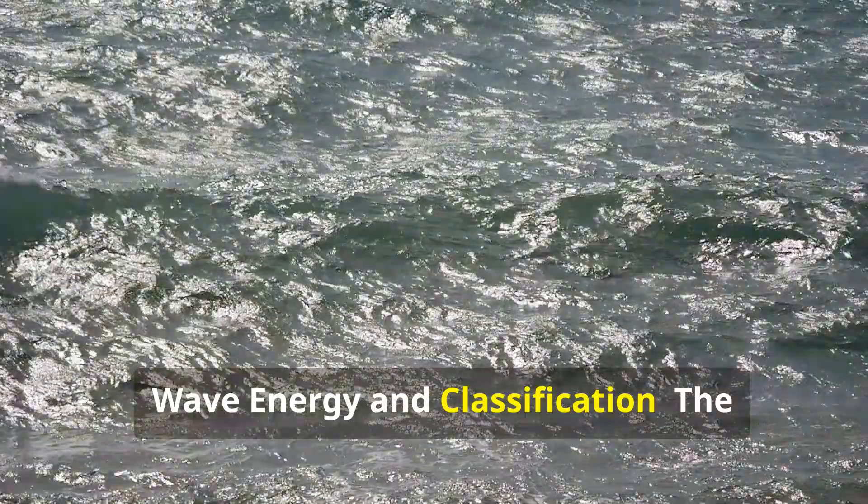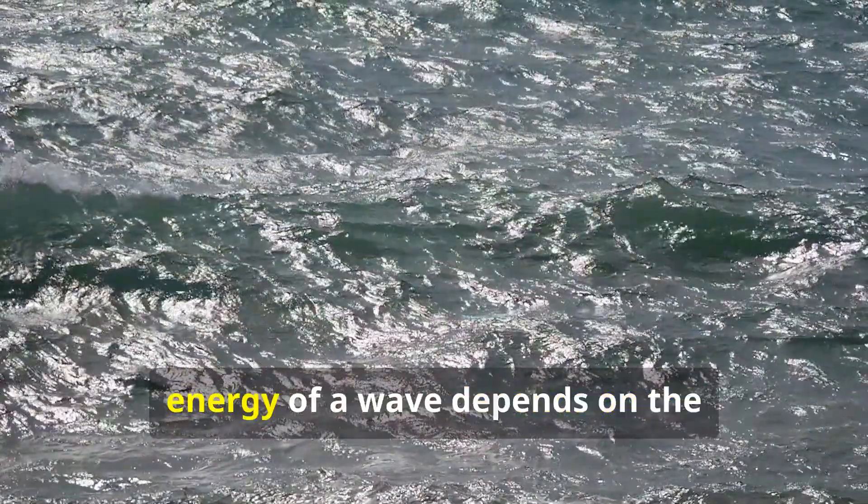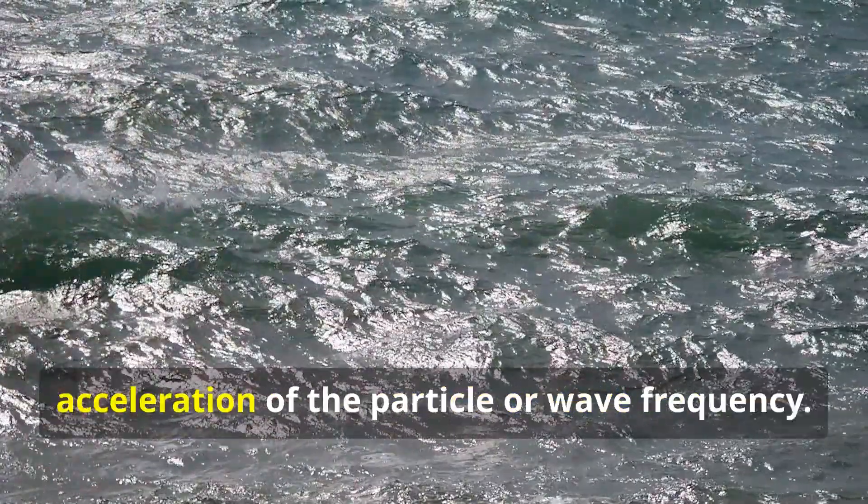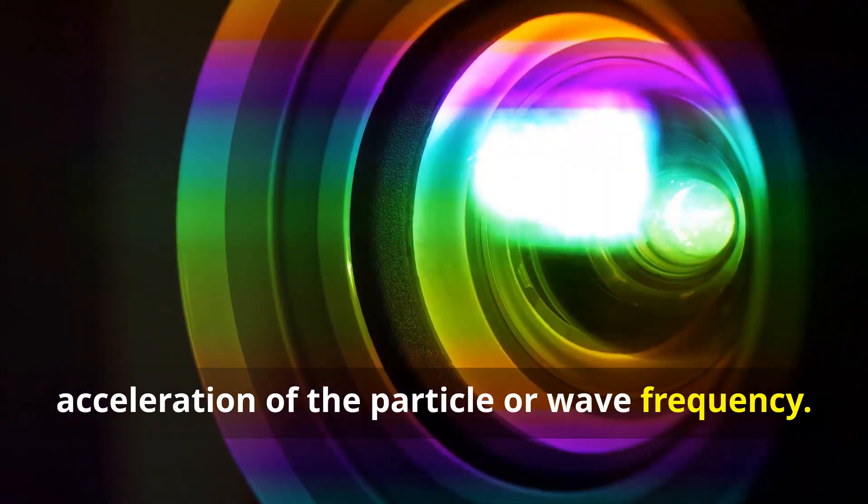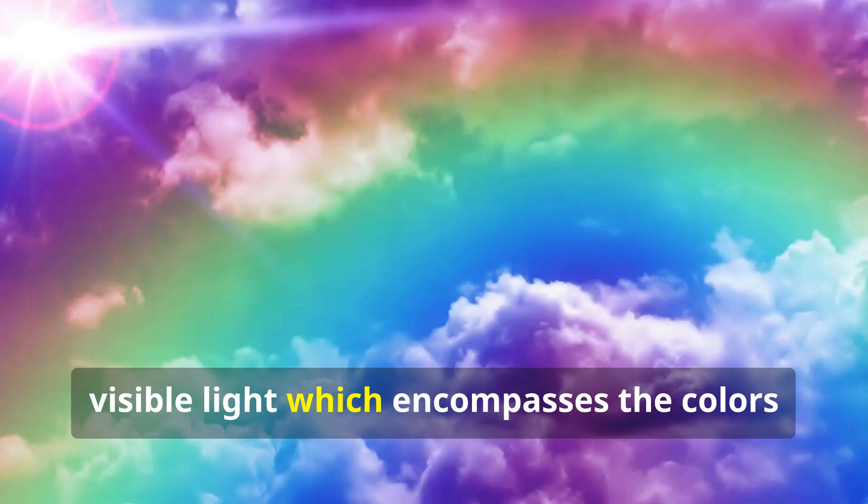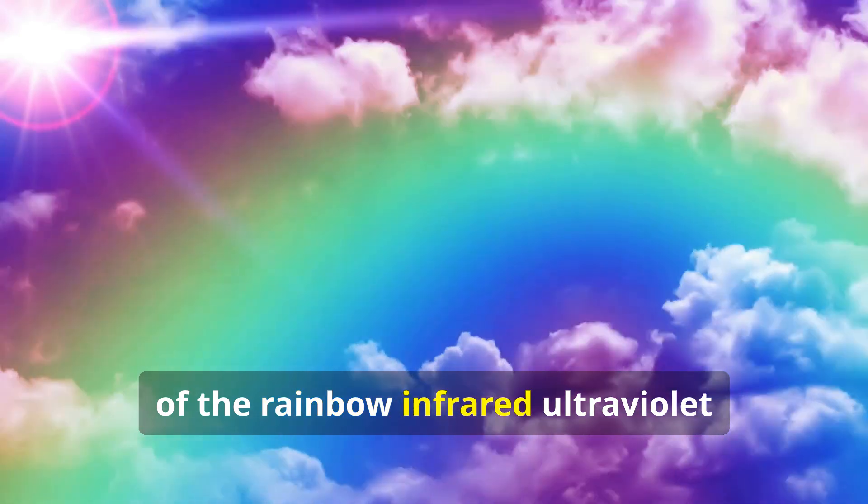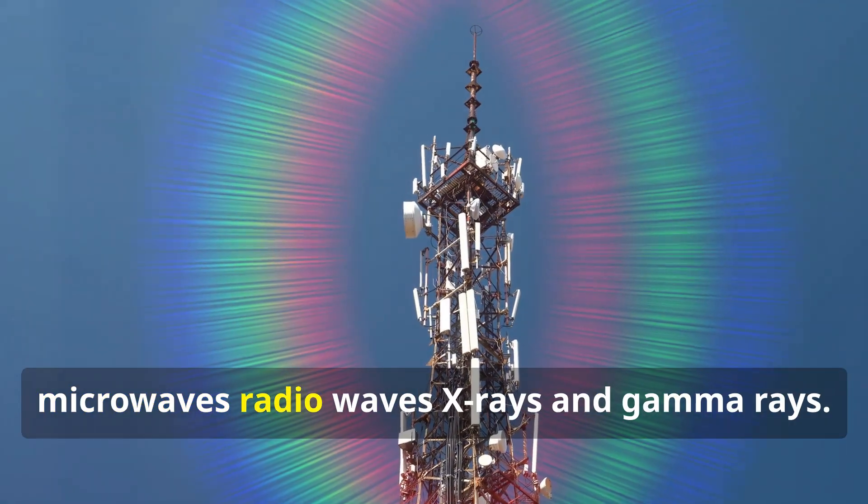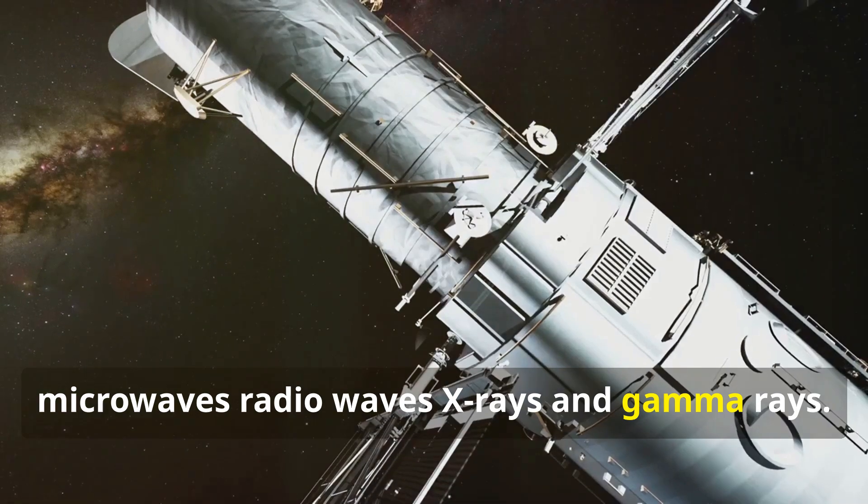The energy of a wave depends on the acceleration of the particle or wave frequency. Types of electromagnetic waves include visible light, which encompasses the colours of the rainbow, infrared, ultraviolet, microwaves, radio waves, X-rays and gamma rays.